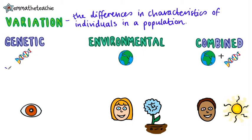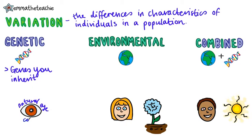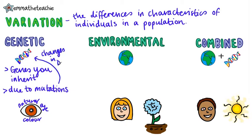First up are genetic factors. This means that the genes you inherit from your parents can determine some of your characteristics, like natural eye colour. There is a lot of genetic variation within a population. This is caused by mutations. Mutations are changes to your DNA, and they're happening all the time, but it's very rare that they actually lead to any physical change. But when they do, you get a new variant.